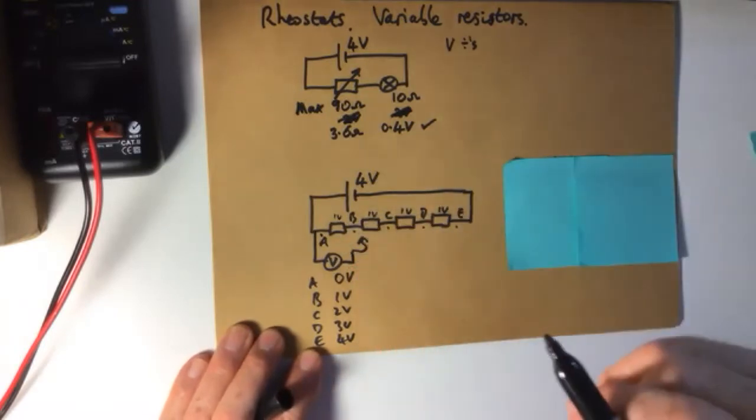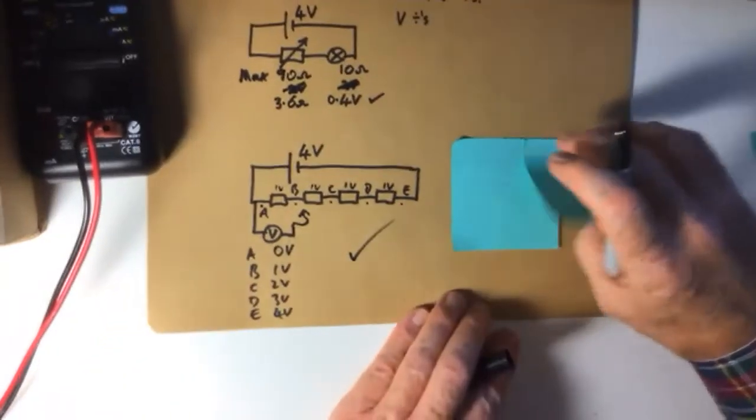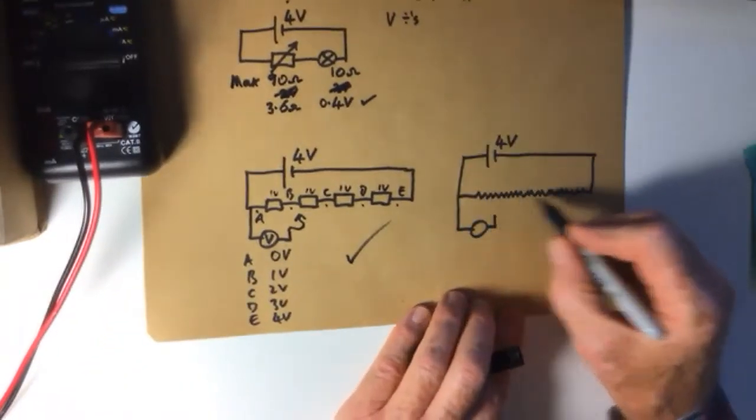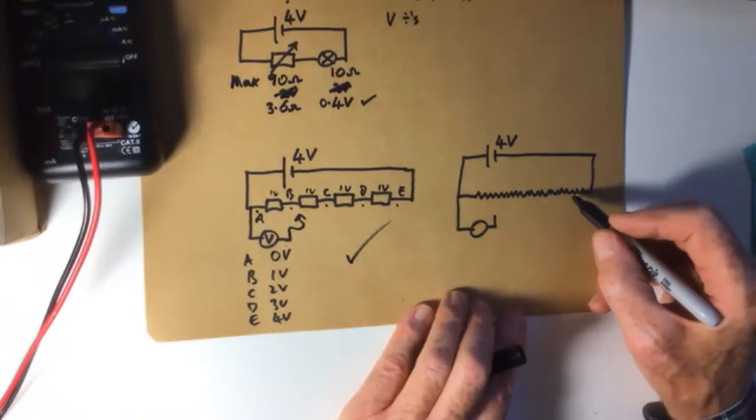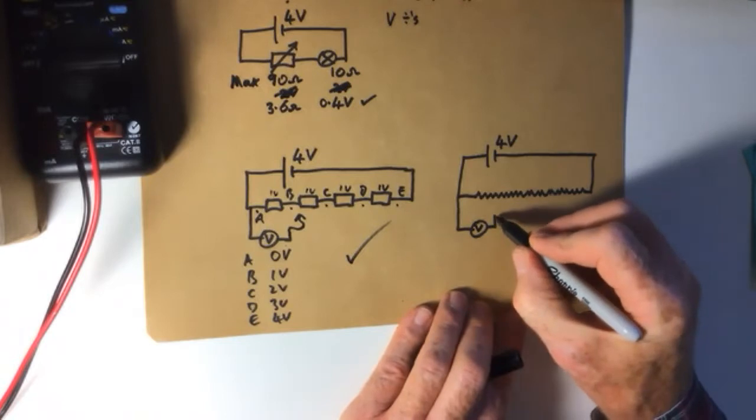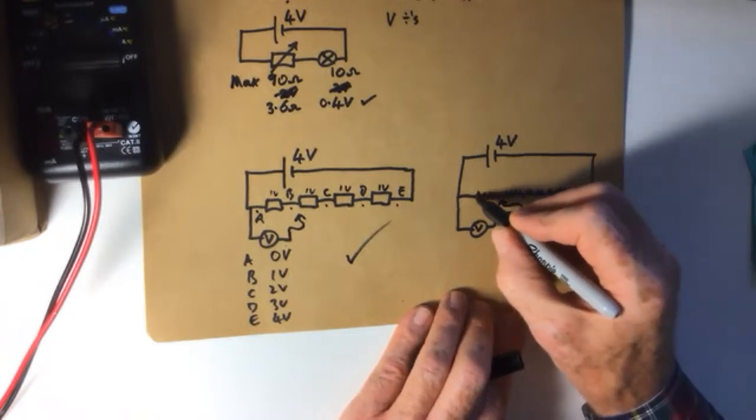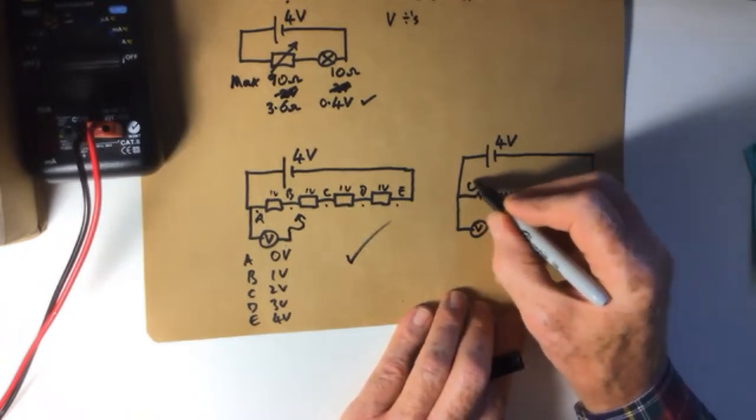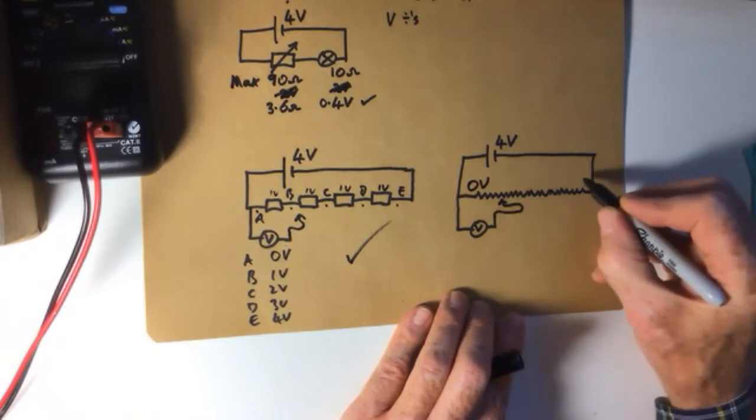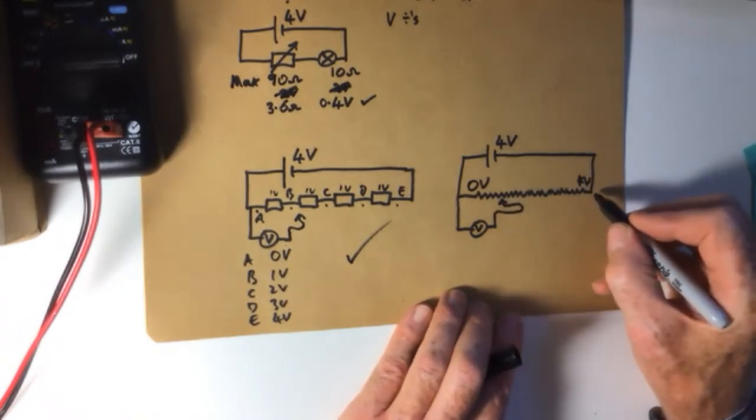So with that little bit of knowledge stuck in your brain, let's look at this. Instead of using resistors, what if we used a wire? Well, if we had a voltmeter here, and we had a wire that we could slide a little connection along, we could go from here, which will give us zero volts, up to the maximum here at four volts, and anything in between.